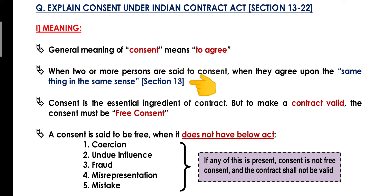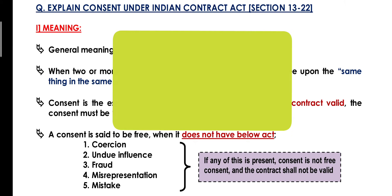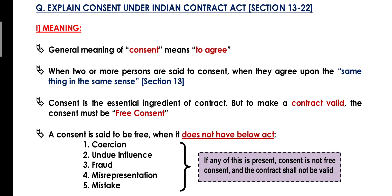For example, I am ready to sell you my flat at Rs. 20 lakhs, and aapke dimaag mein bhi vahi flat hai, and you are accepting it. This is called agreeing on the same thing in the same sense. But kya is tarike ka acceptance kaafi hai valid contract banne ke liye?